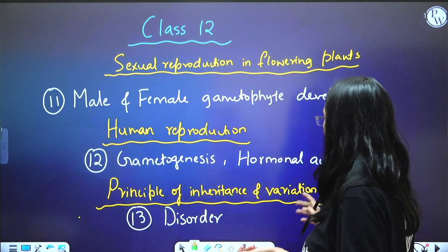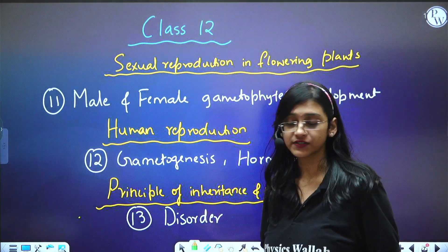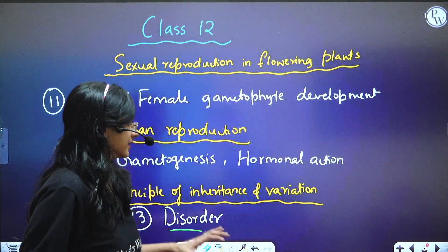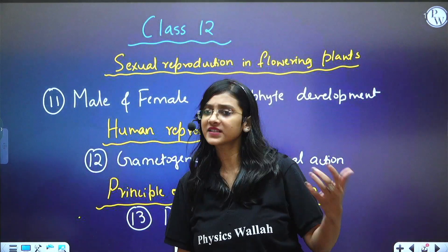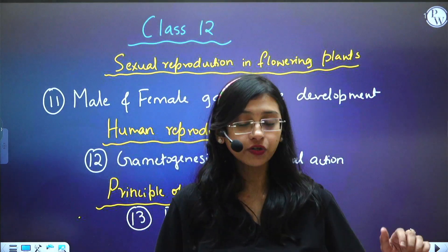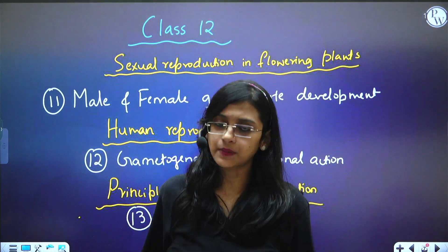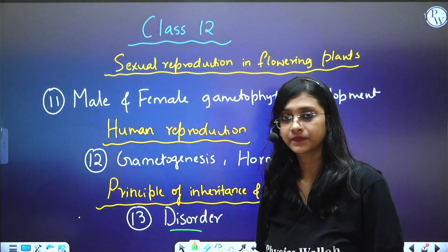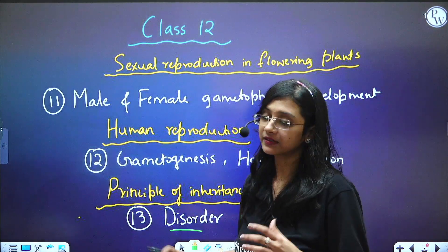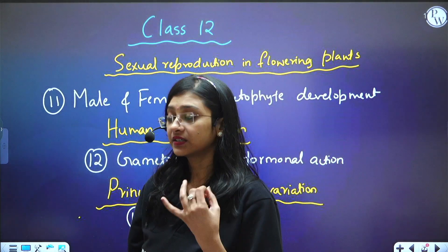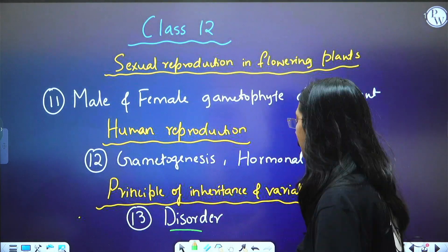From Principles of Inheritance and Variation — a high-weightage chapter — all the disorders are very important. Not just in this chapter, but across Class 11 and 12 biology chapters (for example, locomotion and movement has disorders too), so you need to know disorders from all chapters. Under Principles of Inheritance, genetic disorders — chromosomal disorders, gene-related disorders, and single point mutations — are all important.